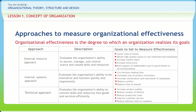To evaluate effectiveness, managers usually take one of three approaches: the external resource approach, the internal systems approach, and the technical approach. The external resource or system resource approach allows managers to evaluate how effectively an organization manages and controls its external environment. It assumes the organization must be successful in obtaining resource inputs and maintaining the organizational system to be effective, and is valuable when other indicators of performance are difficult to obtain.